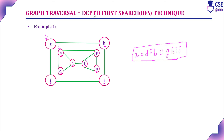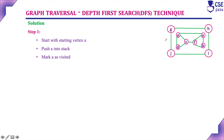The data structure used in depth first search traversal is the stack data structure. In breadth first search, we use a queue data structure. Now we will discuss how to implement the depth first search traversal technique using a stack data structure step by step. Whenever you reach an unvisited vertex for the first time, push it into the stack.